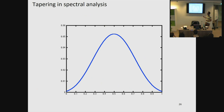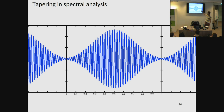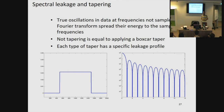We can control spectral leakage by using tapers — we taper the edges of the signal to zero. When we then make the signal periodic, the transition between one window and the next is smooth for every signal, so there are no sharp transitions anymore. For example, applying a taper to a 41 hertz oscillation and making the signal periodic, at the edges there is a smooth transition. What is nice about these tapers is that we can use multiple of them and benefit from their combined effect.